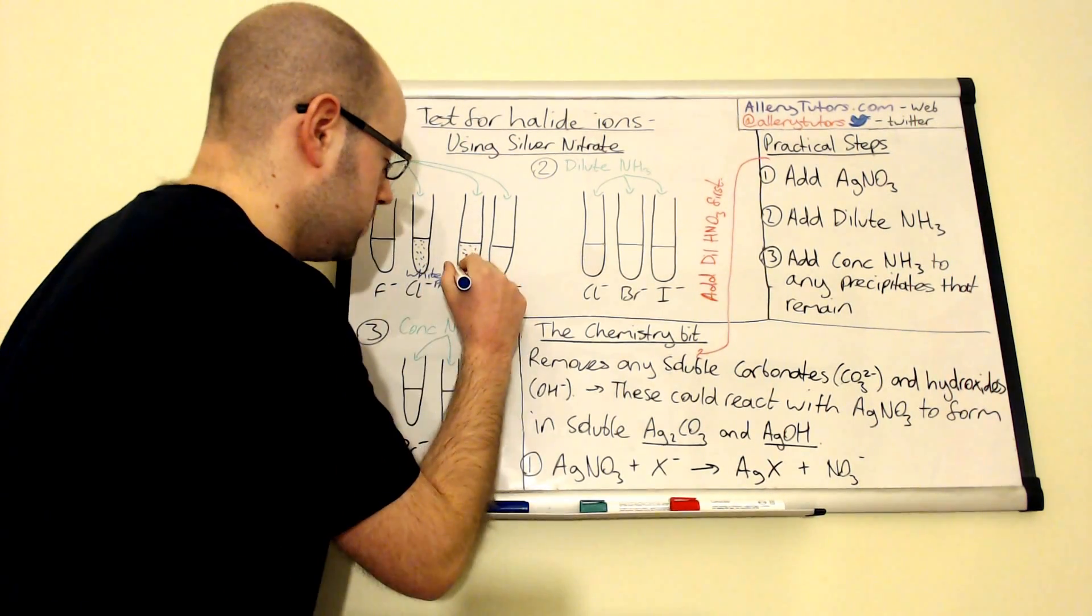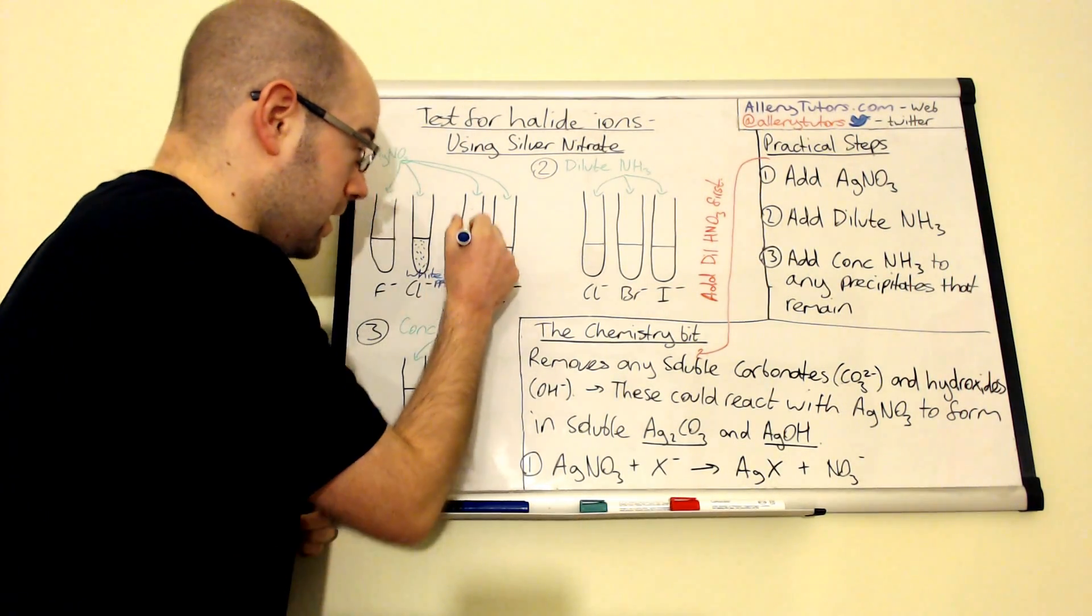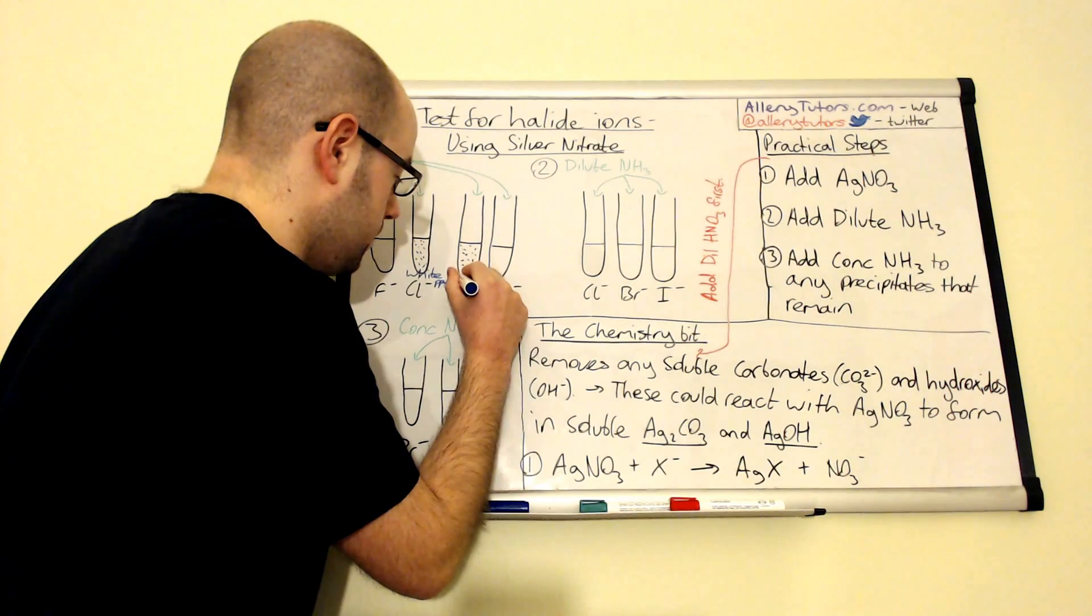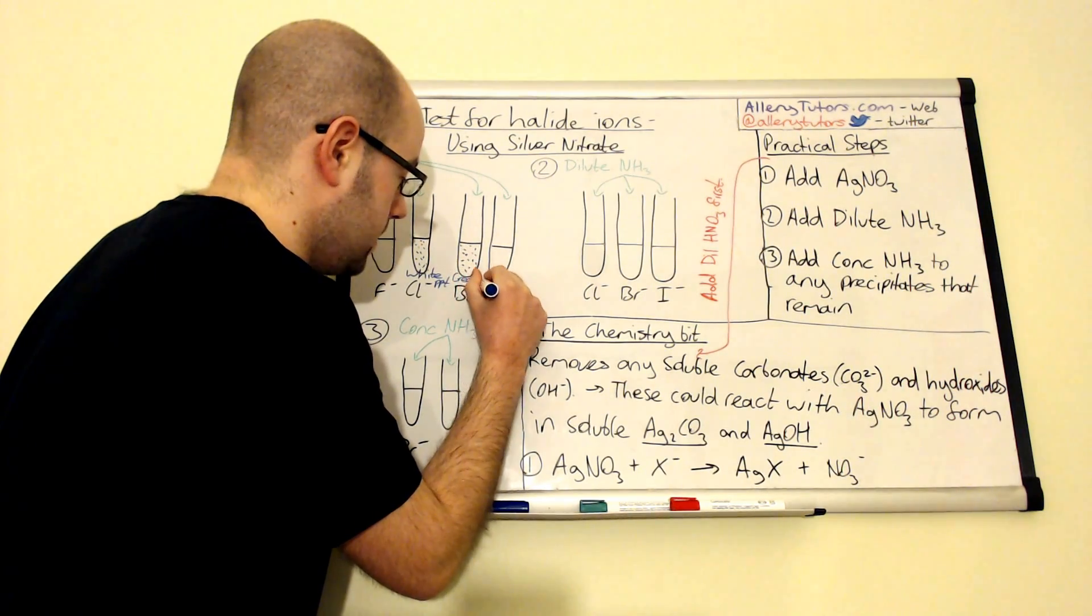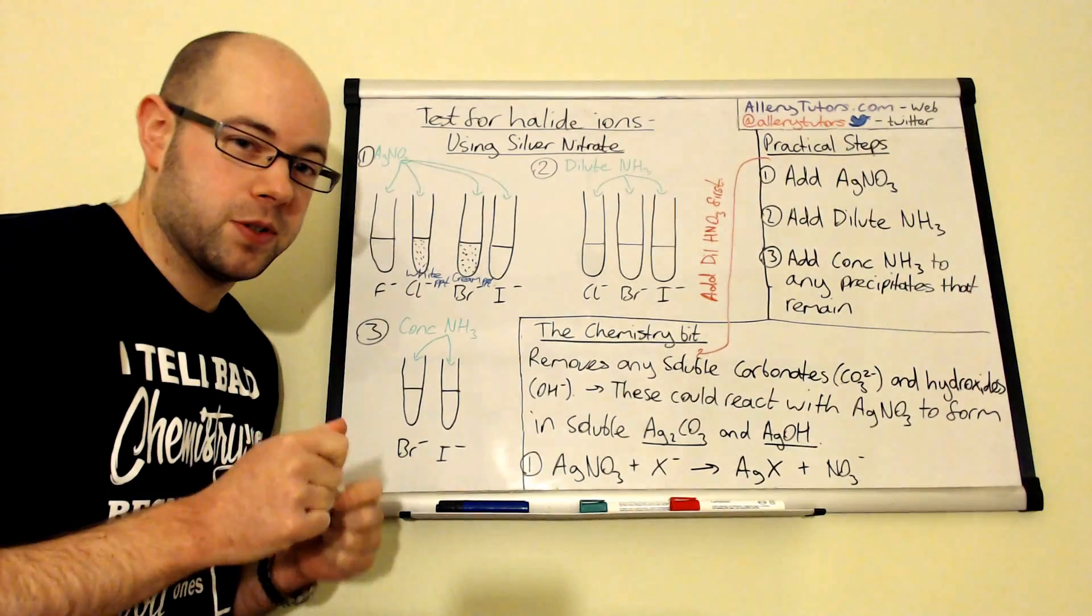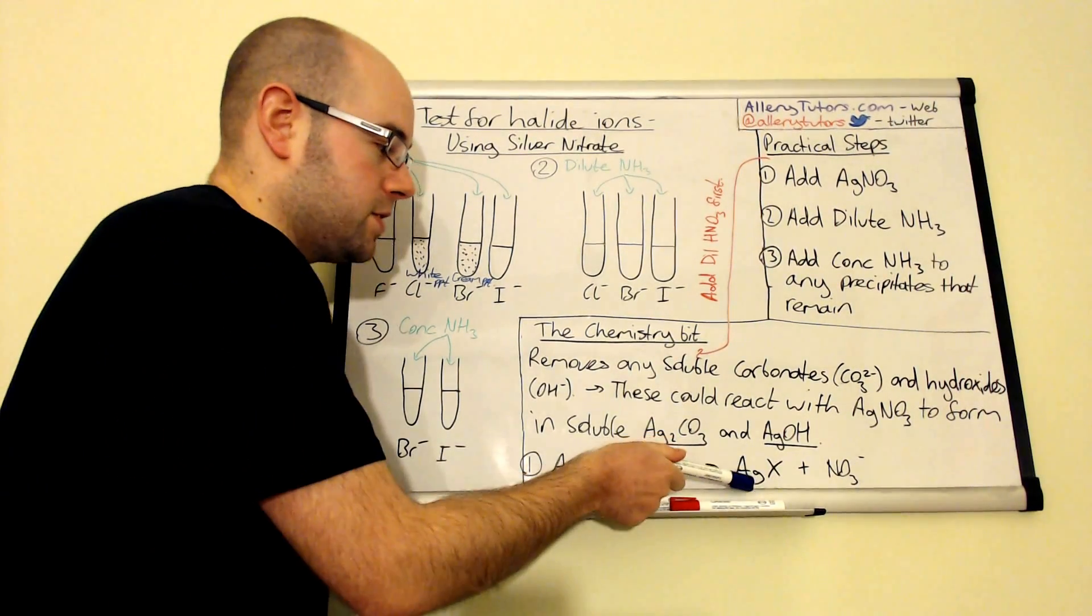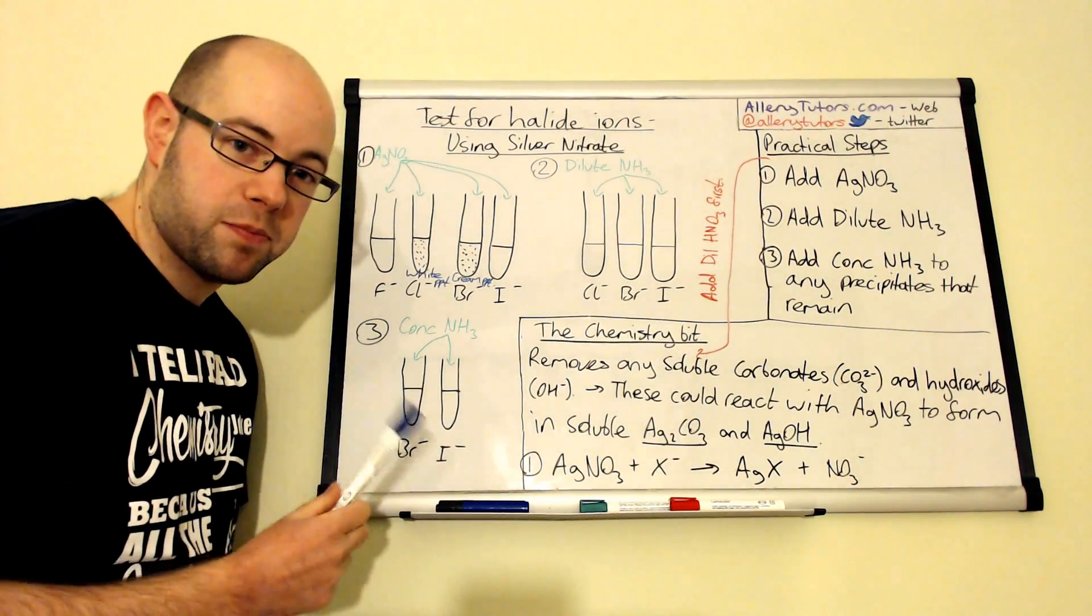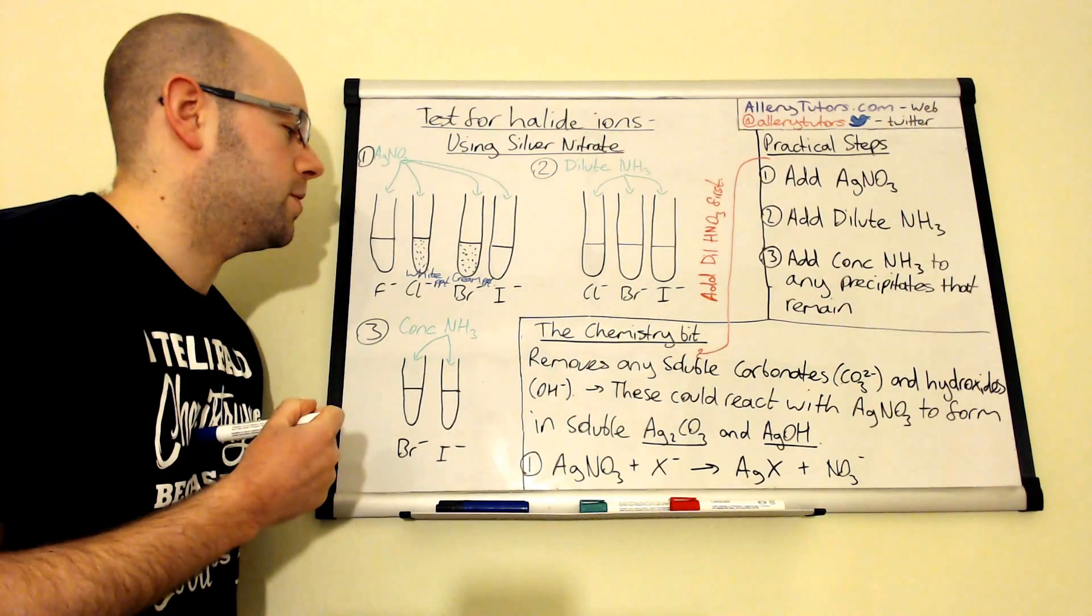The halide ion reacts with the silver nitrate and forms a cream precipitate. So that's a cream precipitate that's formed in there. And that cream precipitate is your silver bromide. That's what the precipitate is, the name of the chemical that you formed.